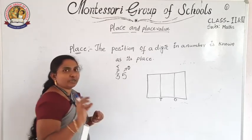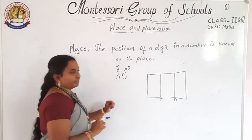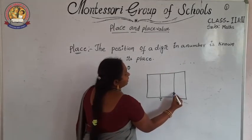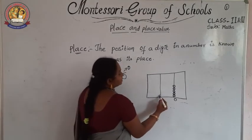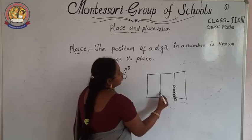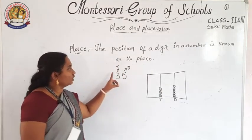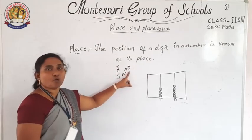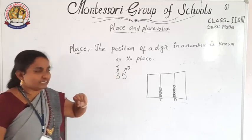In the abacus, we arrange marbles: 5 marbles for the ones place and 3 marbles for the tens place. So 3 is in tens place and 5 is in ones place.